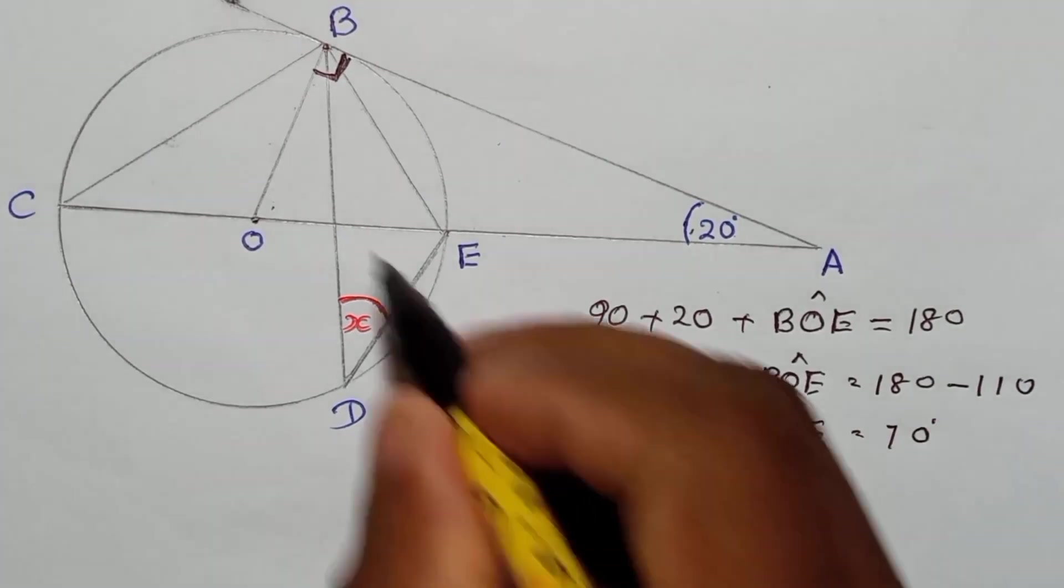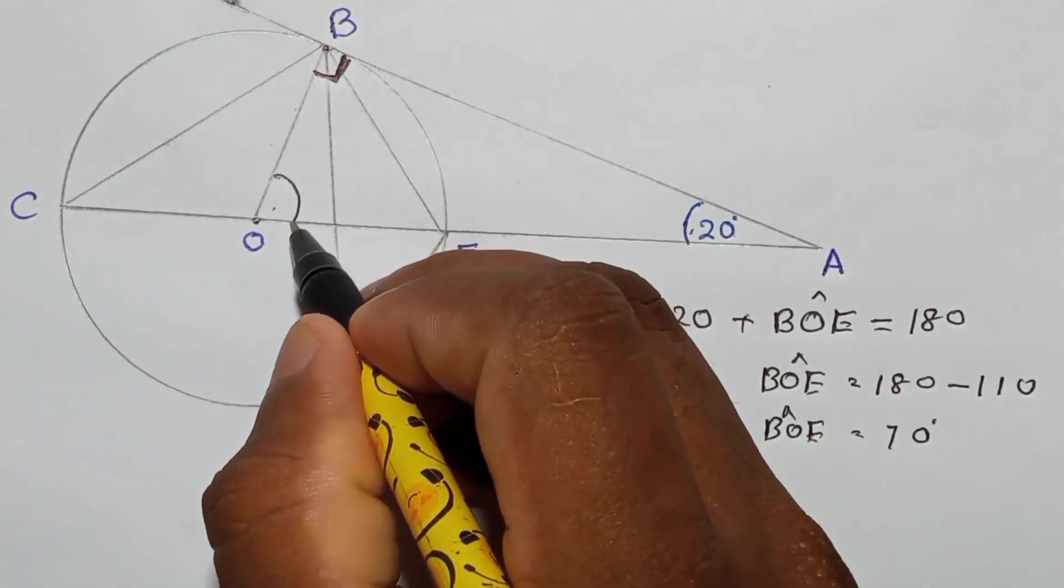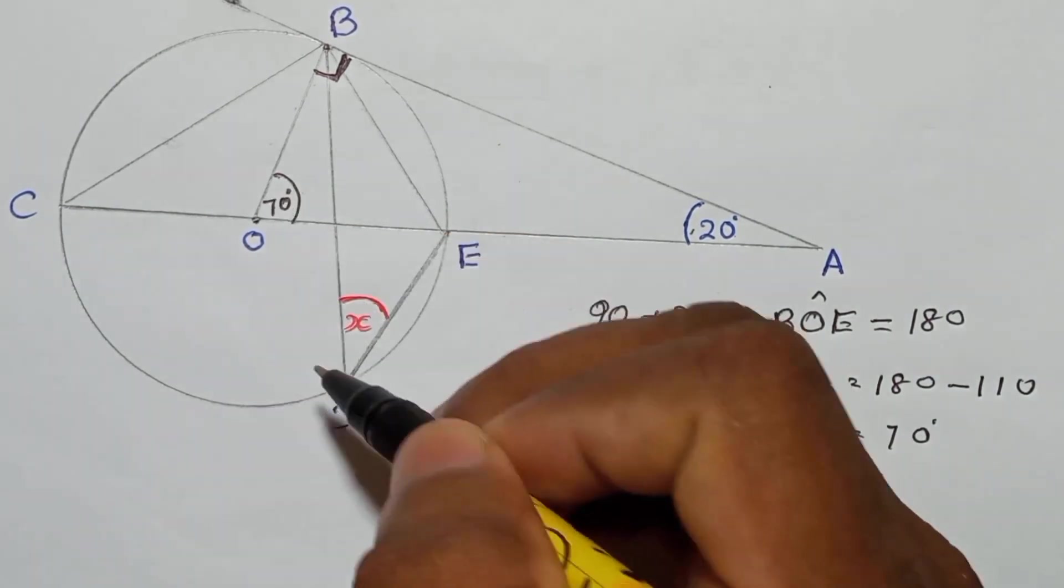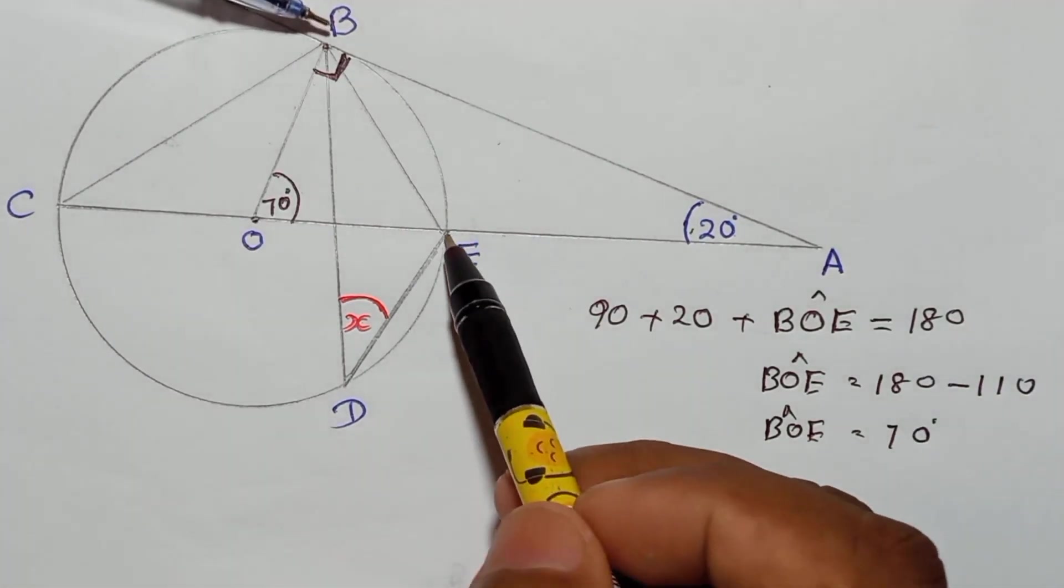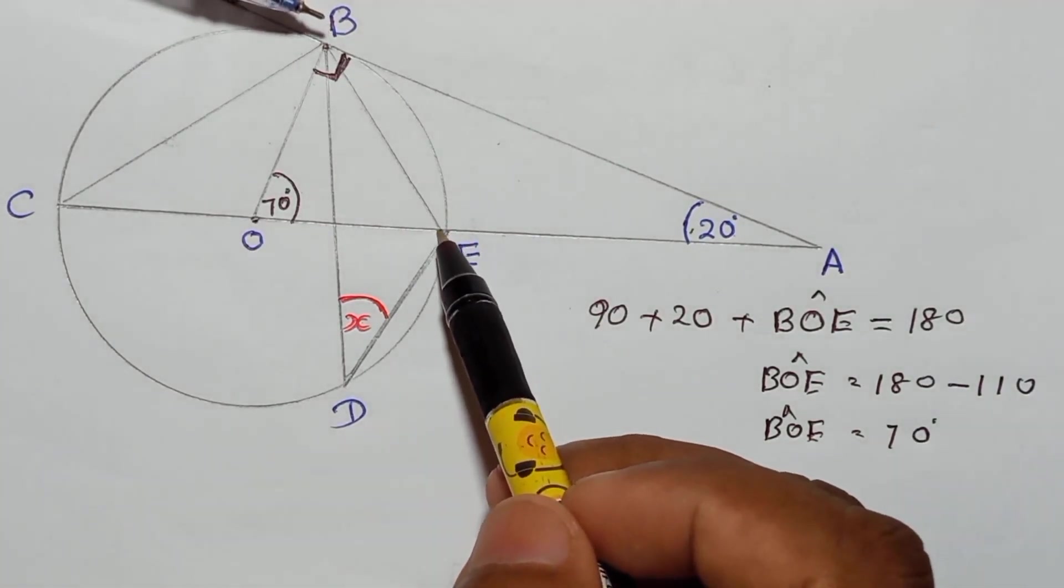That means this angle is 70 degrees. This is 70. And then after, you need to consider another theorem which we learned: from the same two points of the circumference, if you go to the center and from the same two points if you go to the circumference, you can apply that theorem.